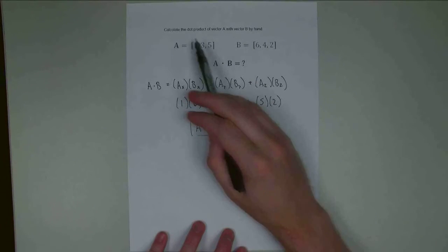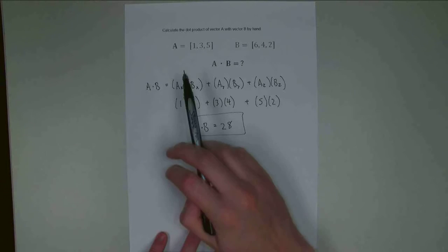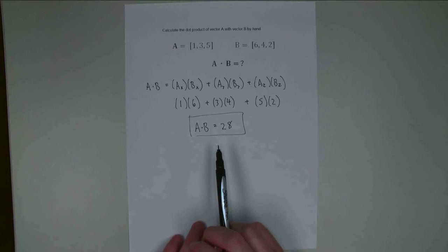And since neither of these vectors have any units, my solution doesn't have any units either. We'll also notice that we started with vectors, but the dot product ends us with a scalar value. So this does not have any sort of direction with it.